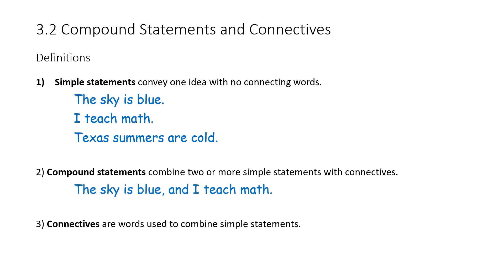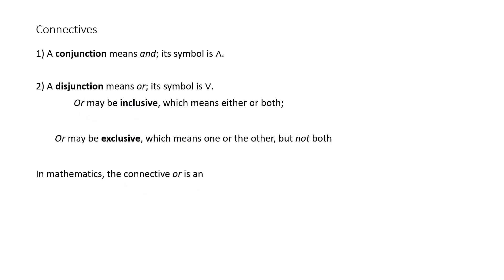Third, connectives are words used to combine simple statements. For example, a conjunction means 'and' — its symbol is an upside-down V (∧). A disjunction means 'or' — its symbol looks like a right-side-up V (∨).